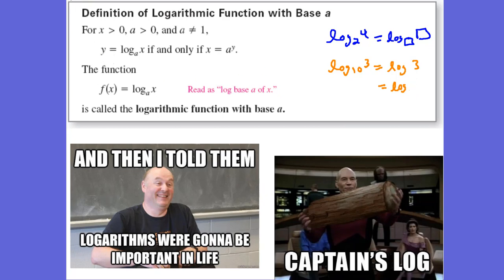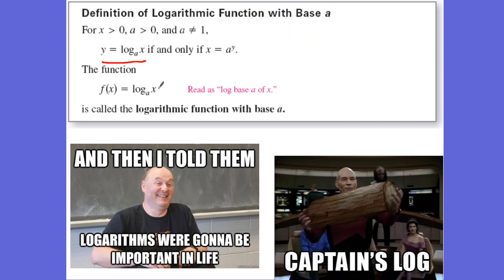If we have a y — I'm going to put this in red — and you have a base A in blue, and x in orange, then that means x, this orange value, is equal to the base A to the y power. One of these is called logarithmic form, and the other is called exponential form. Logarithmic form has the log in it, and exponential form has an exponent in it.